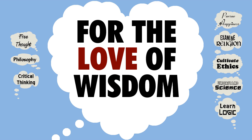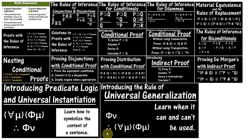You are currently watching For the Love of Wisdom, my YouTube channel on freethought, philosophy, and critical thinking. This video is part of a series of videos on symbolic logic. In the past two videos, we started learning about predicate logic and looked at the rules of universal instantiation and universal generalization — the two universal counterparts to the existential rules we'll be learning about in this video.